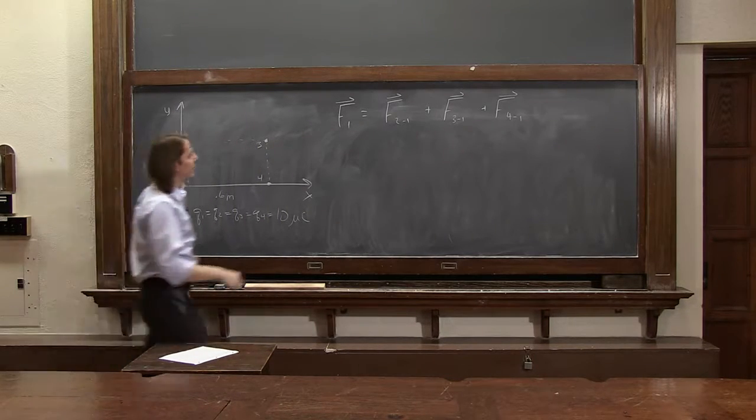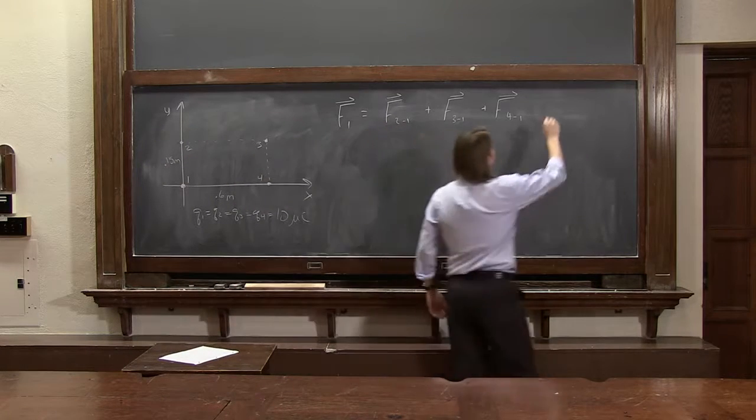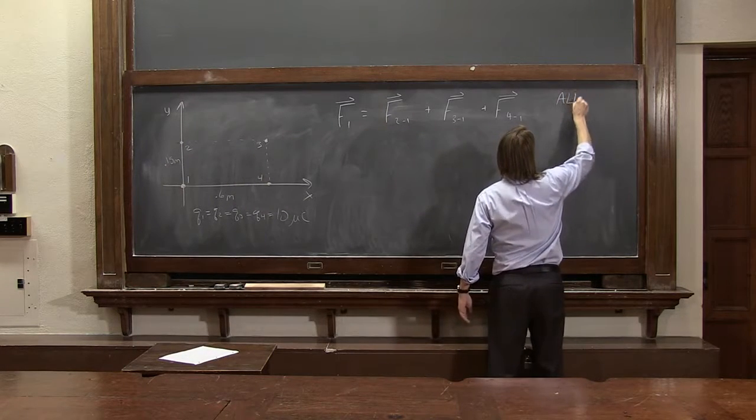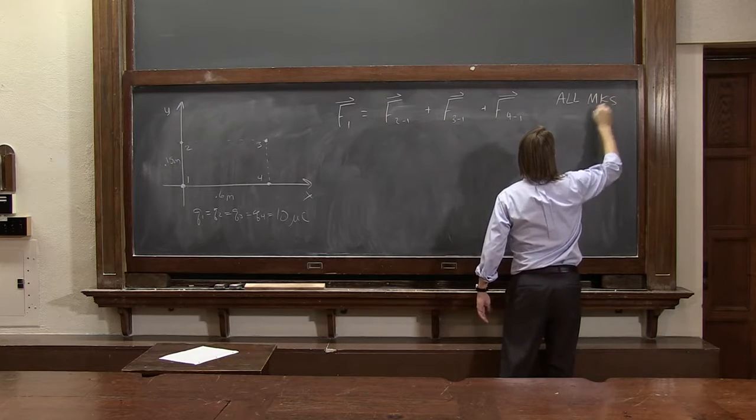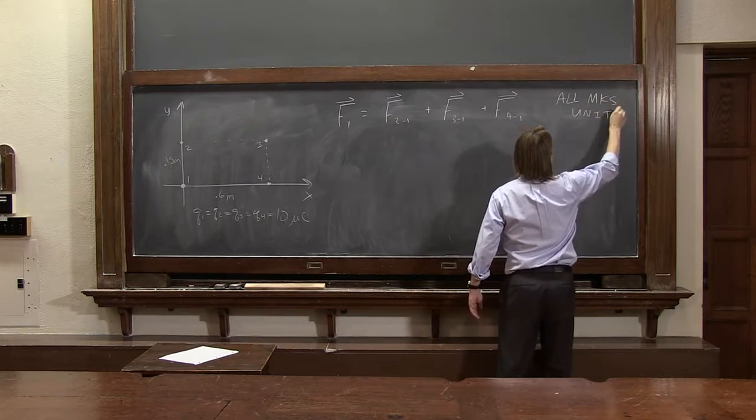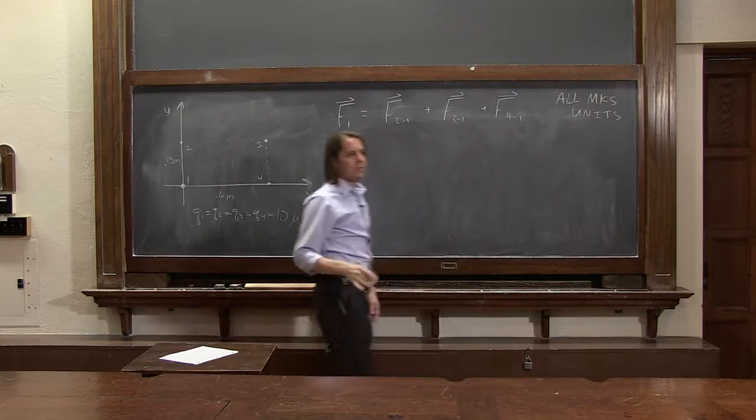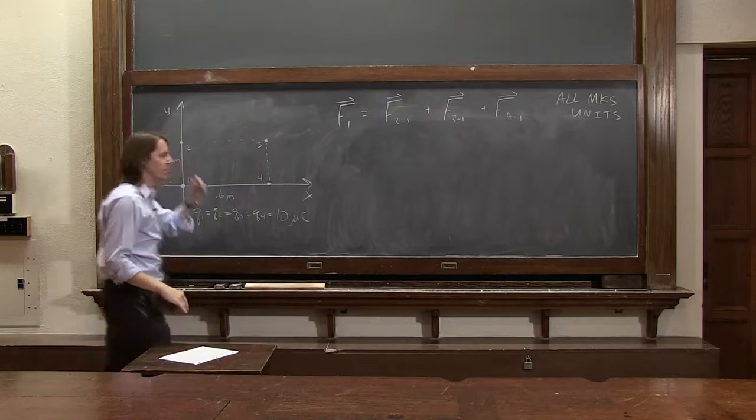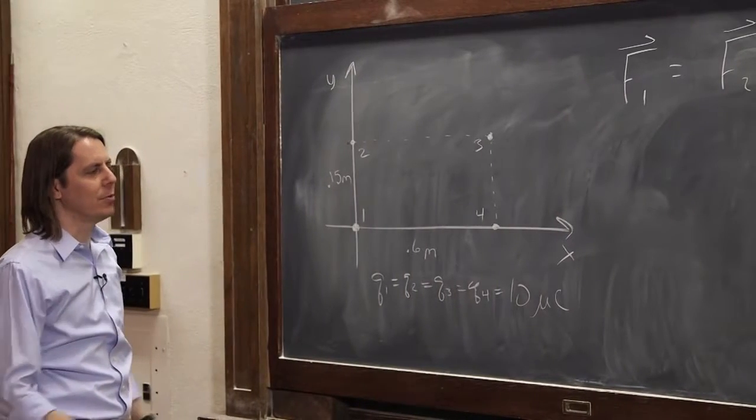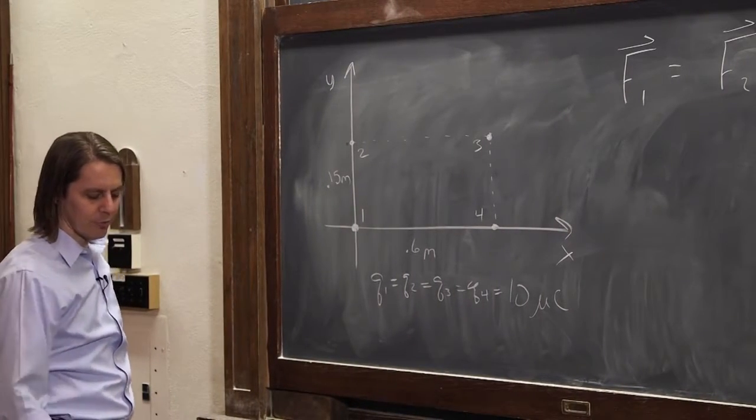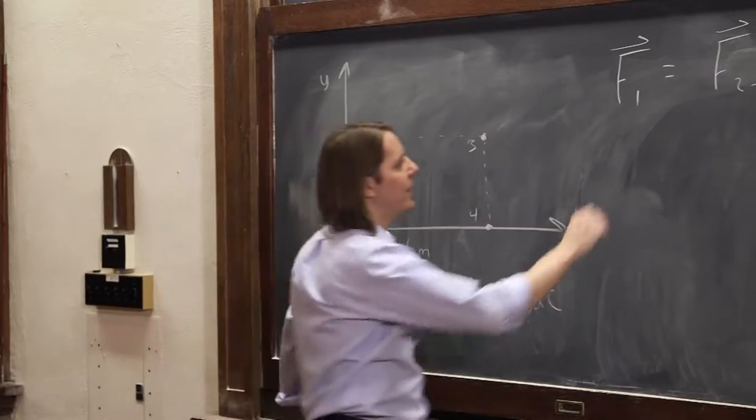So now we just need to get each one. Let's do 2,1. And let me put one note. I'm going to do this all MKS units. So I'm not going to write the unit in all the little expressions. Everything is MKS. So I'm not going to write meters and coulombs and newtons and all that.